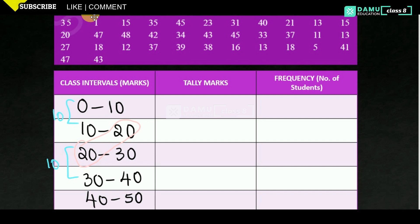Now using tally marks: 35 will be included in 30–40. Then 1 included in 0–10. 15 in 10–20. 35 again in 30–40. 45 in 40–50. 23 in 20–30. 31 in 30–40. 40 will be included in the last interval 40–50. 21 in 20–30. 13 in 10–20. 15 in 10–20.